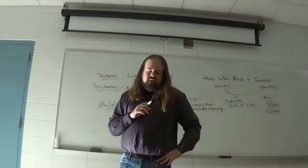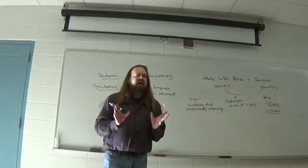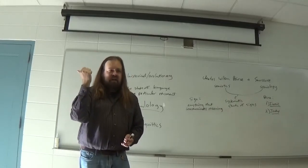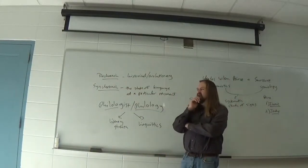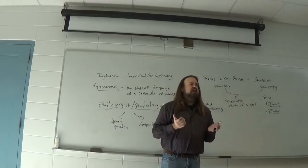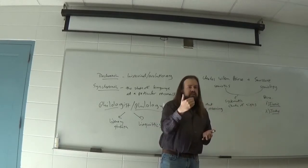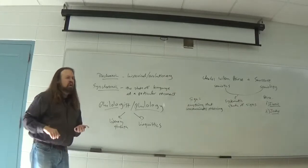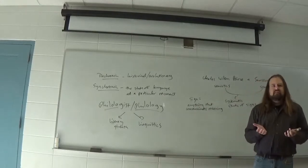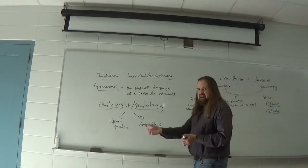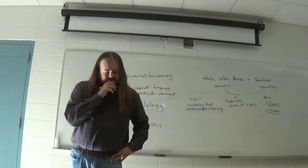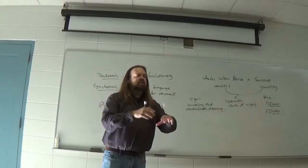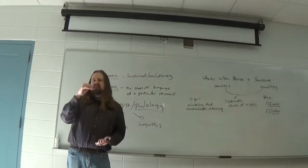The second kind of sign Peirce calls an index. In an index sign, there's some sort of natural relationship between the thing signified and the signifier. For example, if you're looking out over a forest and you see a plume of smoke — that's an indexical sign telling you there's a fire down below. If you're wandering through the woods and you step in a pile of bear droppings, that's an indexical sign that there are bears nearby. A thermometer tells you the temperature because the mercury in the tube reaches a certain number — that's also an indexical sign.